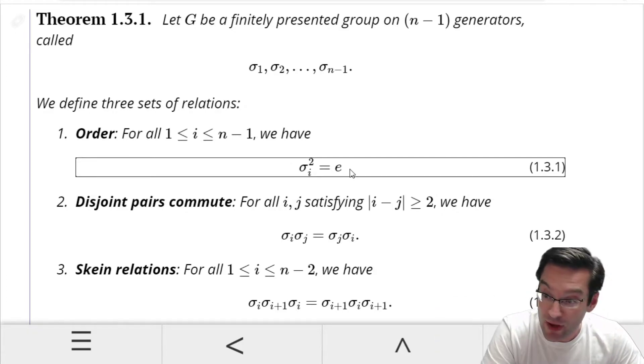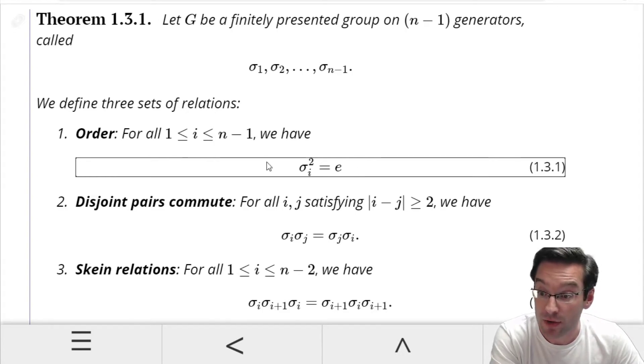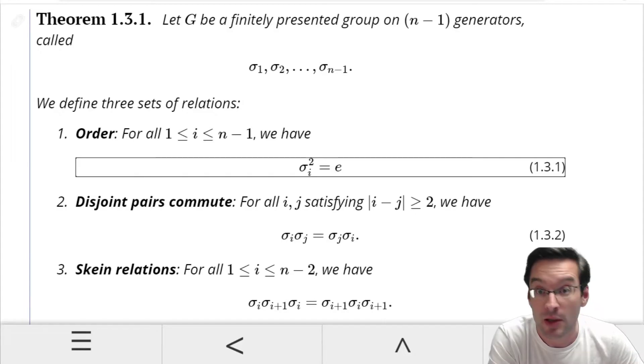Permutation groups satisfy all three types of relations: order, disjoint pairs, and the skein relations. Braid groups are characterized by satisfying just relation 2 and relation 3. The order of elements that are the generators of the braid groups is infinite — I can keep twisting my adjacent pair at a positive orientation as many times as I want, and it will never untwist itself back to the identity. The disjoint pair relation and the skein relations still characterize how the generators in the braid group interact with one another.